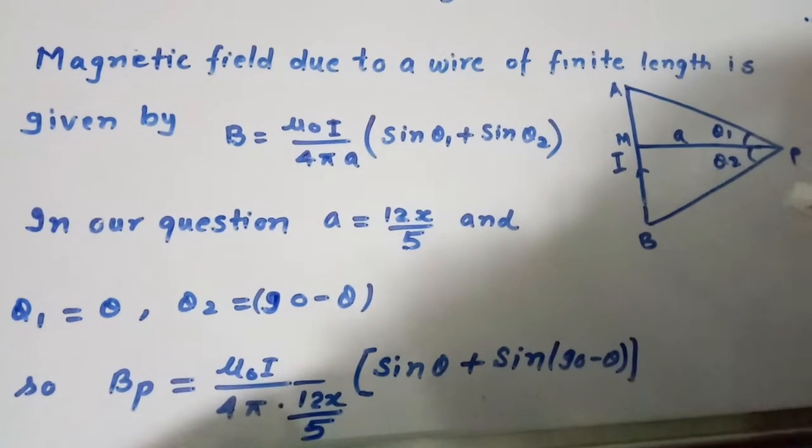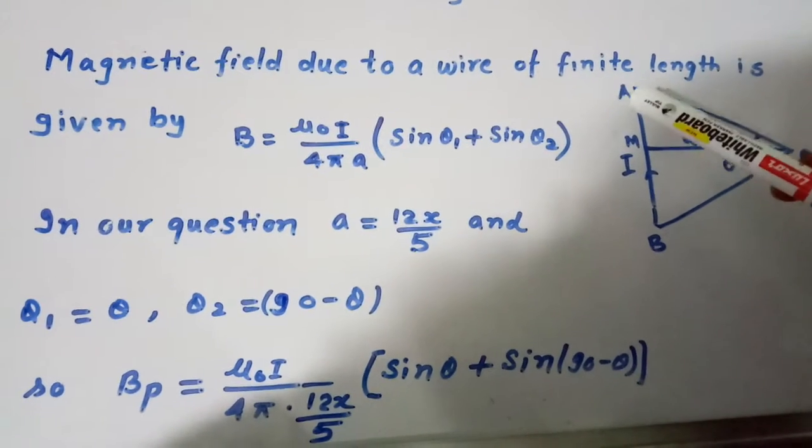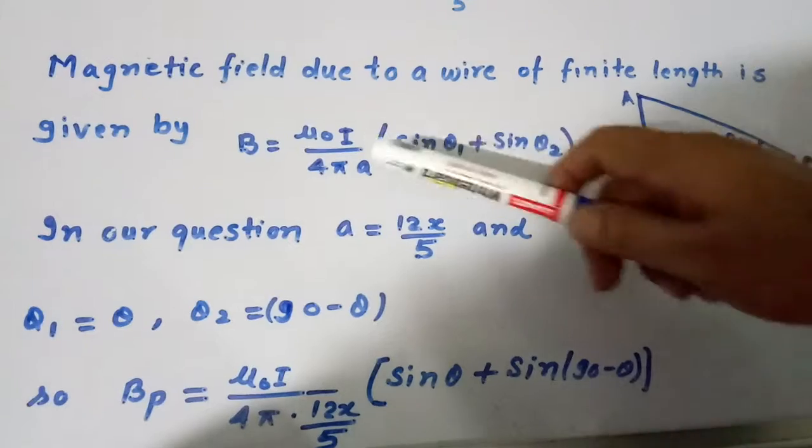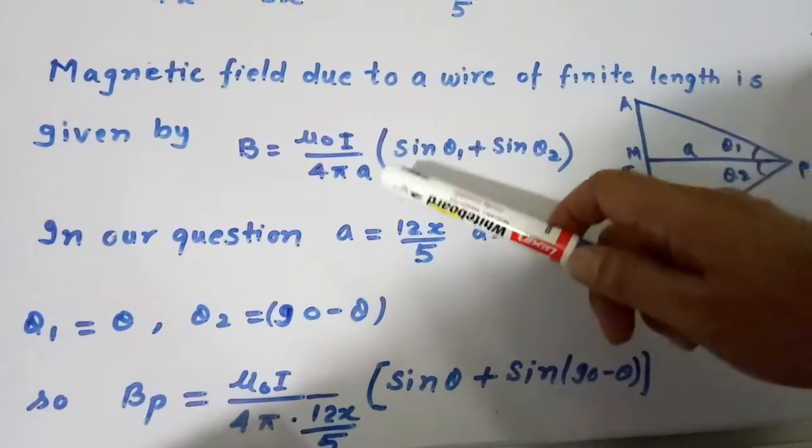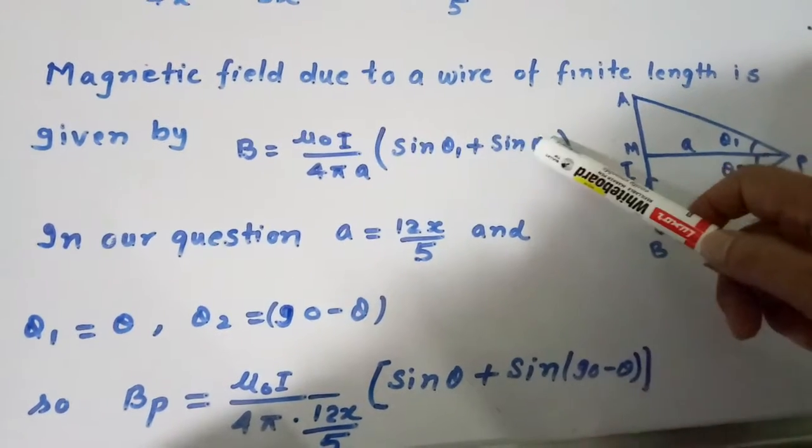We know that magnetic field due to a wire of finite length is given by B equal to μ₀I divided by 4πA times (sin θ₁ plus sin θ₂), which is shown.